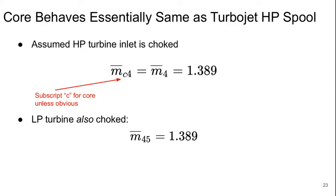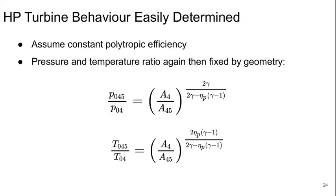And the same overall approach can be used as what we just used for the two-shaft turbojet, but the LP shaft consideration is a lot more complicated now because not all of the flow goes through the core. The core itself behaves essentially exactly the same as the HP spool of the two-shaft turbojet. We are going to take our high-pressure turbine element to be choked and the LP turbine also to be choked.